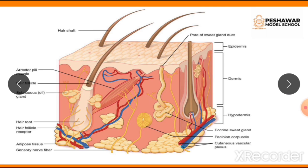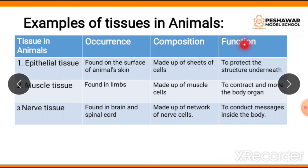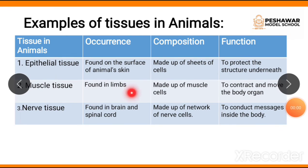The composition of epithelial tissue is sheets of cells, visible as a layer in the diagram. Their function is similar to epidermal tissue in plants — they protect the structure underneath. The second animal tissue is muscle tissue, found in the limbs — arms and legs. It is made up of muscle cells, and its function is to contract and move the body.